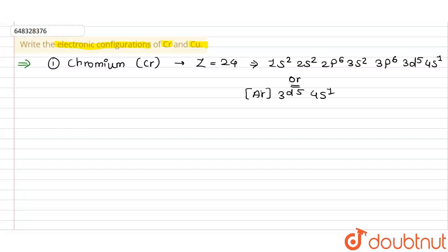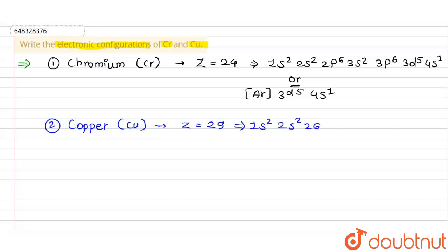The second element is copper, represented as Cu. The atomic number of copper is 29. The electronic configuration is 1s² 2s² 2p⁶ 3s².